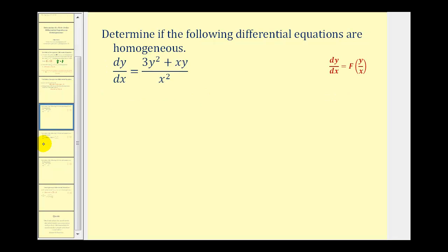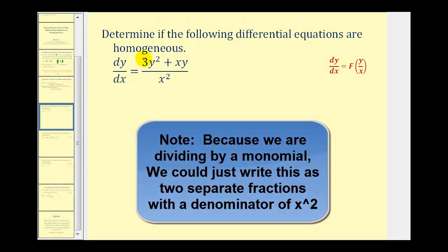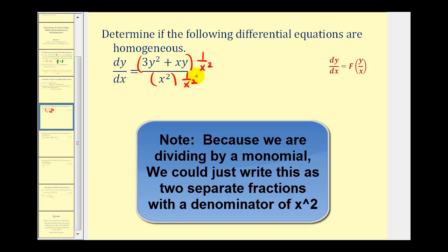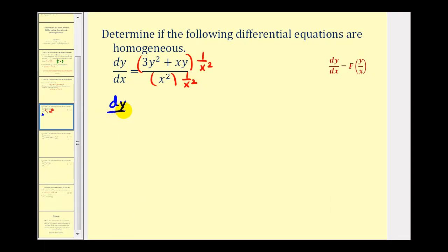Let's take a look at our examples. For this video we're going to focus on writing the right side of the differential equation as a function of y to x or x to y. In this first example we have a y squared term. To write this as a function of y divided by x, we need x squared in the denominator. So we multiply both the numerator and denominator of this fraction by one over x squared.